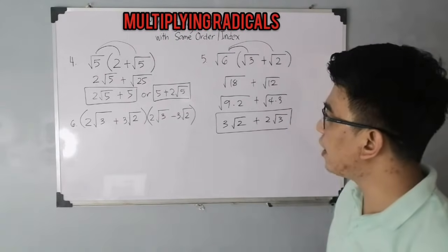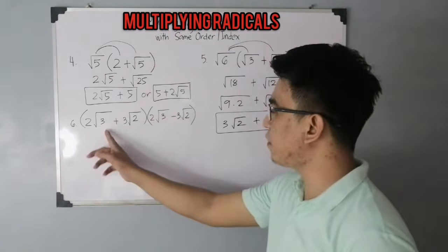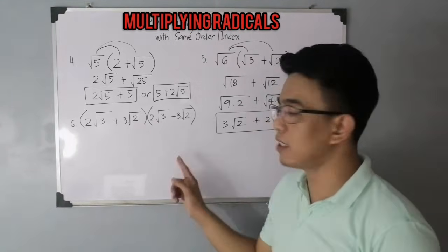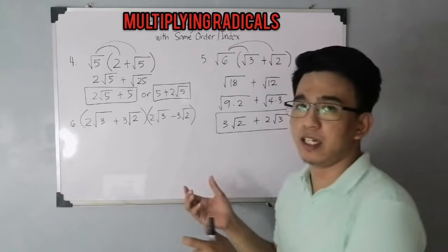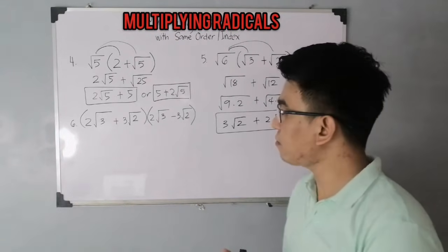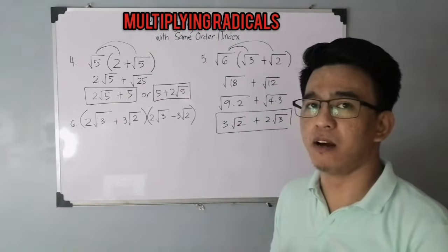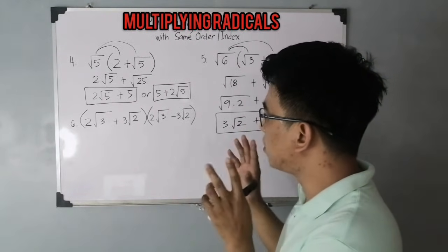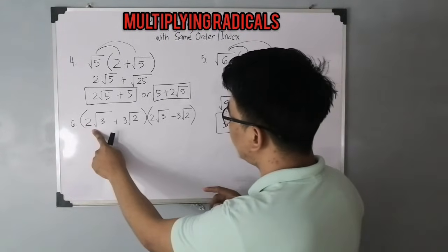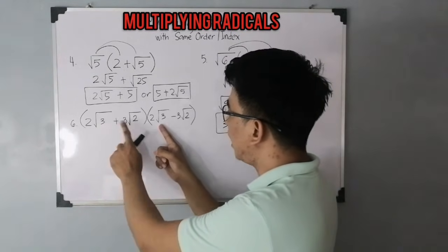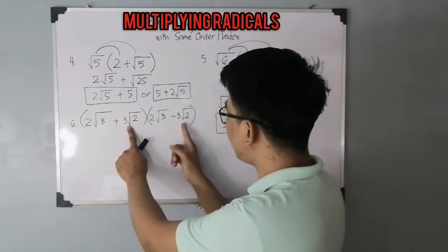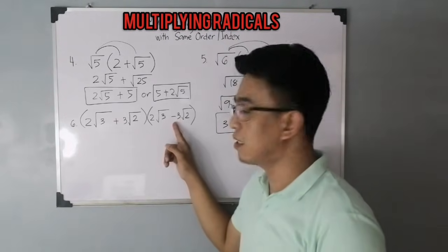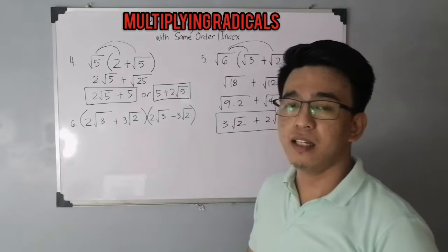Let's move on with item number 6. We are given two binomials: 2√3 + 3√2 times 2√3 − 3√2. Normally we use the FOIL method, but first, try to see the pattern. The first terms are the same, the second terms are the same, and the only difference is their operations — addition and subtraction — meaning we can apply the difference of two squares pattern.